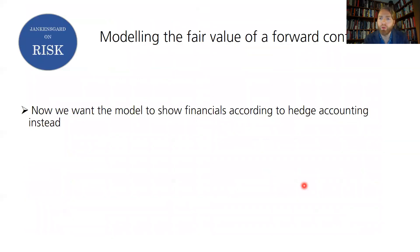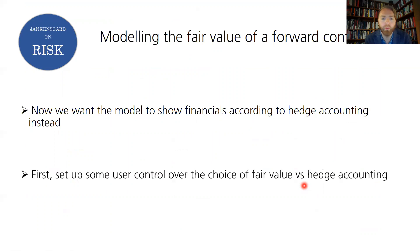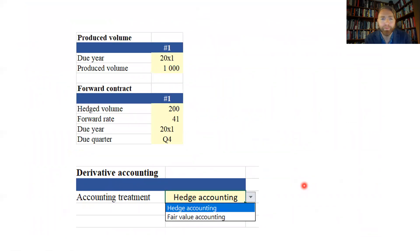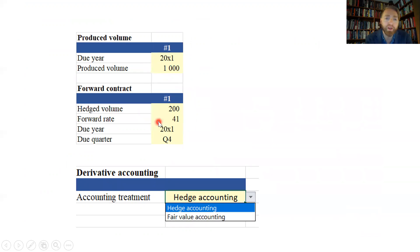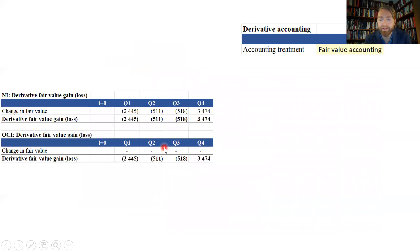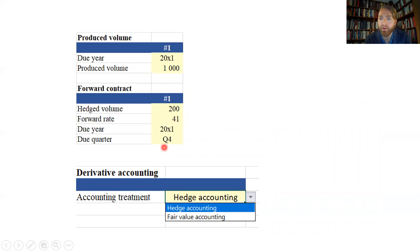We also want to do hedge accounting, or be able to do so if we choose. We want user control over whether we apply fair value accounting or hedge accounting. Here's the risk being hedged — the underlying performance of the business, just a revenue stream — and we're saying that for whatever reason we want to hedge the price exposure in the fourth quarter. And we have user control here over the accounting treatment.